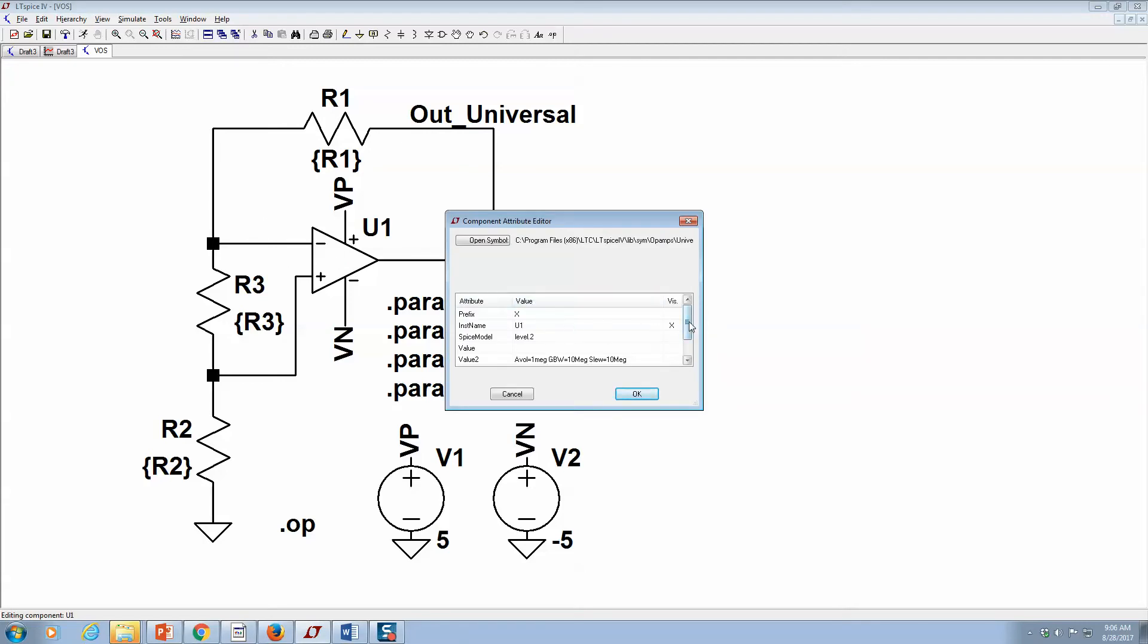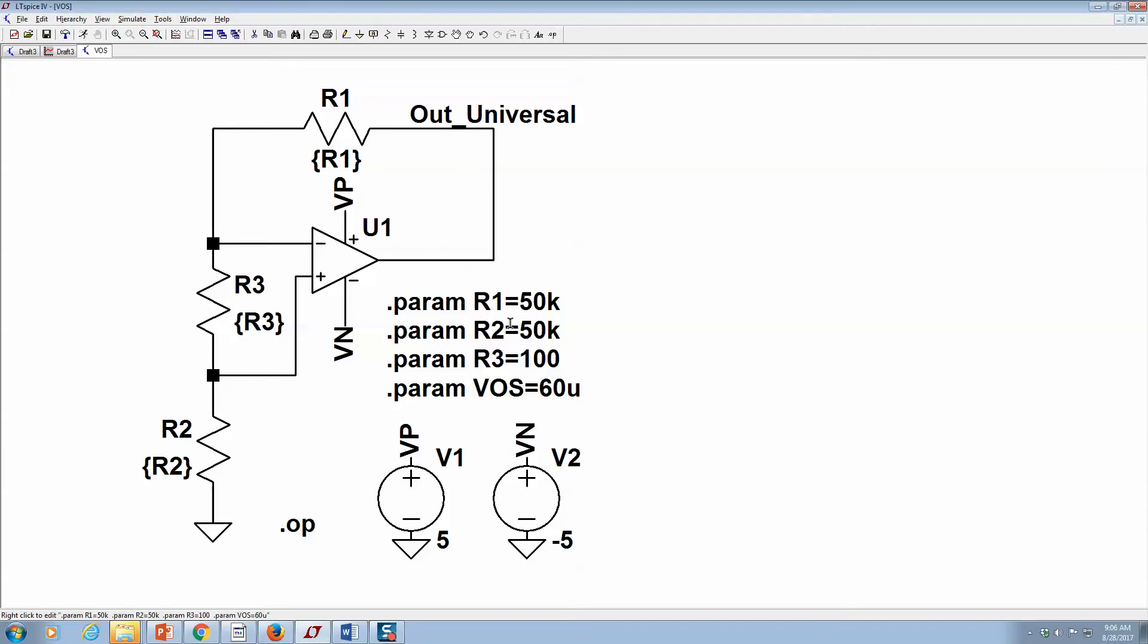What I like to do is go in here where it says V offset and create a variable for it. That way when I make the parameter list over here, I can see it just by looking at the schematic, and how would I do that?